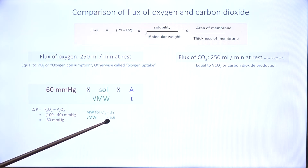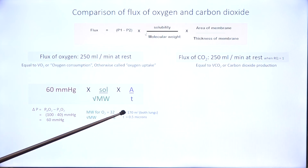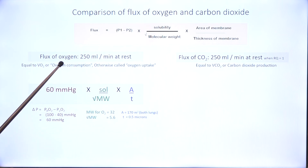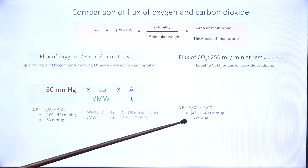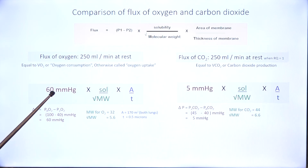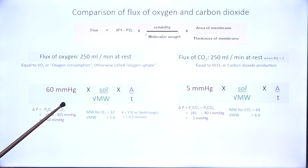Molecular weight of oxygen and its root are as shown. Surface area of the respiratory membrane is as high as 170 square meters for both lungs, and the thickness is about 0.5 microns — those are the numbers used to calculate oxygen flux. In comparison, the partial pressure difference for carbon dioxide is just 5 mmHg. Area and thickness are the same as for oxygen. The root of molecular weight for CO2 is in fact higher than oxygen. Yet, in spite of a much smaller pressure gradient, how is carbon dioxide flux equal to oxygen flux?